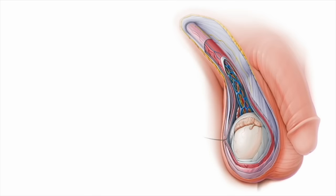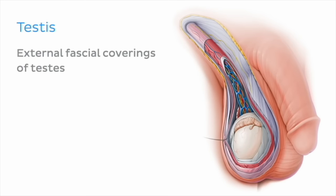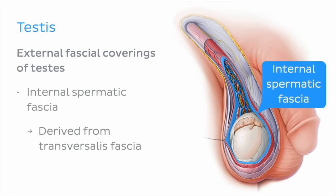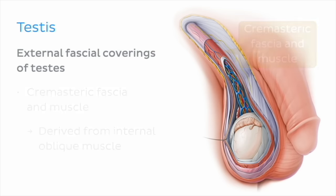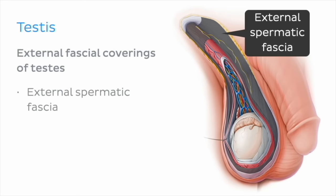Within the scrotum, external to the testes and surrounding the tunica vaginalis, are three fascial coverings. These coverings are extensions of the anterior abdominal wall, which surround and extend along the spermatic cord to encapsulate the testes. The external coverings of the testes, from deep to superficial, include the internal spermatic fascia, the cremasteric fascia and muscle, and external spermatic fascia.